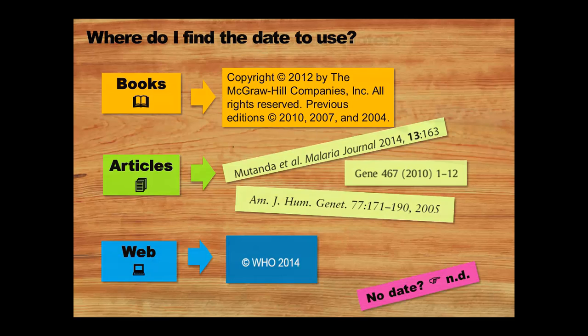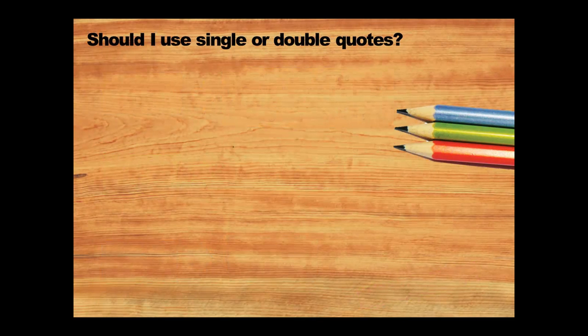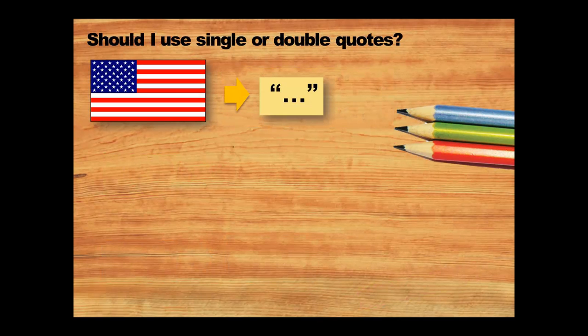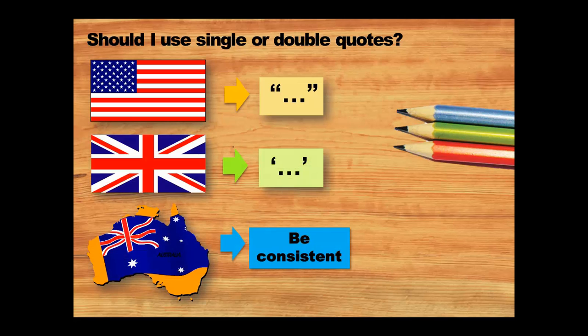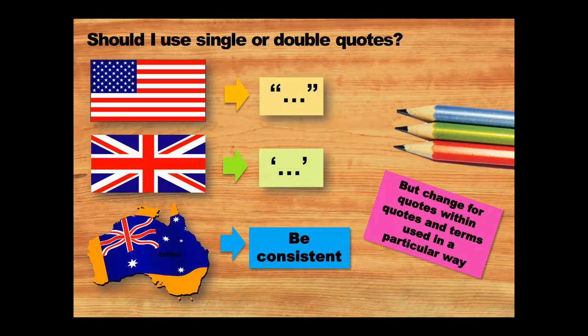Let's take a look at single and double quotes. It's confusing because in the US, double quotation marks are generally used, and in the UK it's the opposite. In Australia, some people use double quotation marks and others use single ones. The advice is to stick with one style for quotes and be consistent, then use the opposite style for quotes within quotes or to show you're using a term in a particular way.